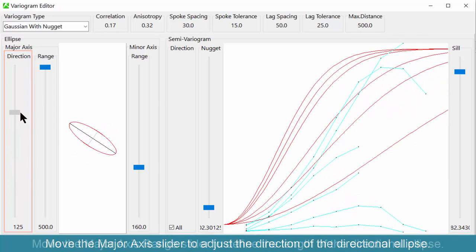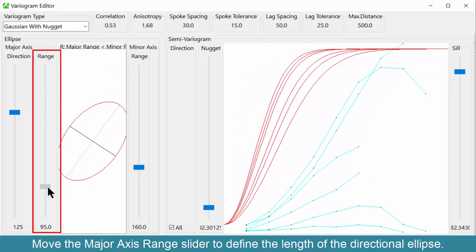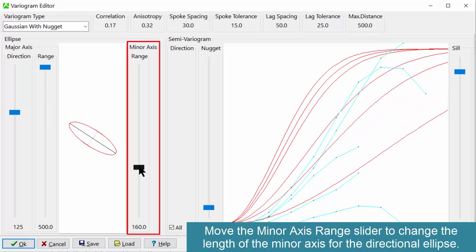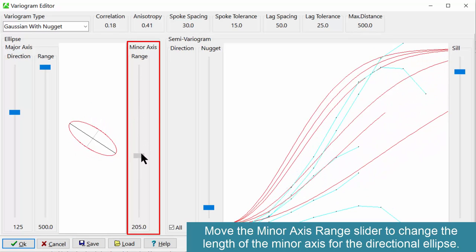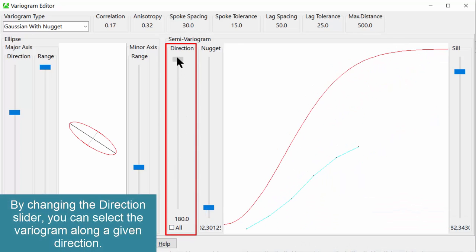Use the lower axis range slider to adjust the direction of the directional ellipse. Move the major axis range slider to define the length of the directional ellipse. Move the minor axis range slider to change the length of the minor axis for the directional ellipse. Note the checkbox labeled all at the base of the semi-variogram direction column. If you turn this off, the direction slider is enabled. By changing the direction slider, you can select the variogram along a given direction.